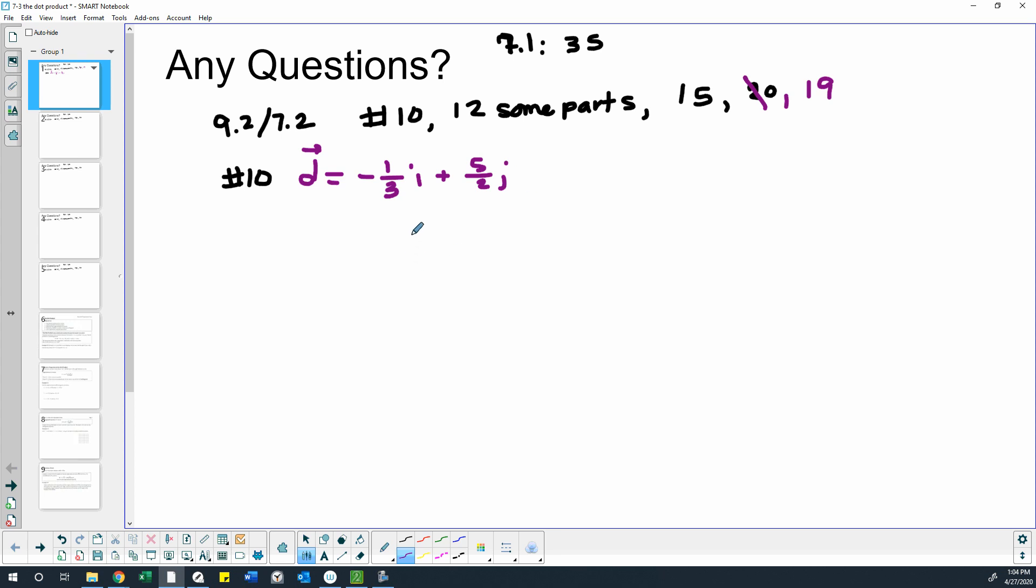So to do that, we need to find the magnitude. We start by doing the magnitude of vector D, which we do by using the Pythagorean theorem. So, negative one-third squared plus five-halves squared.